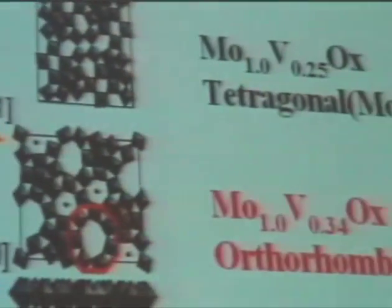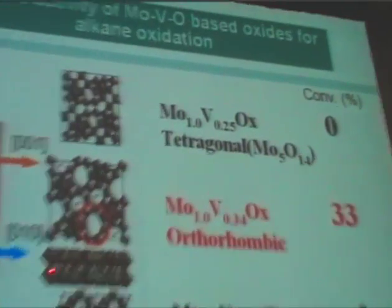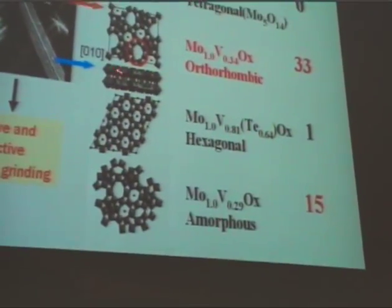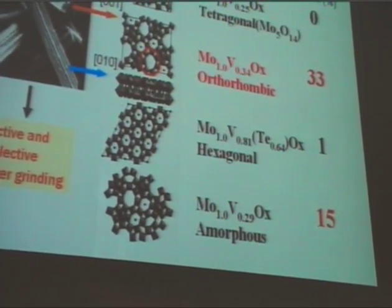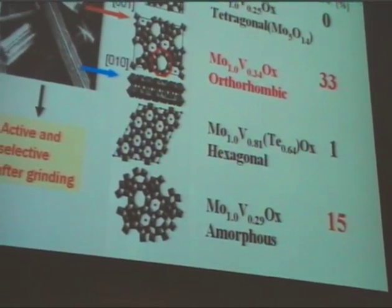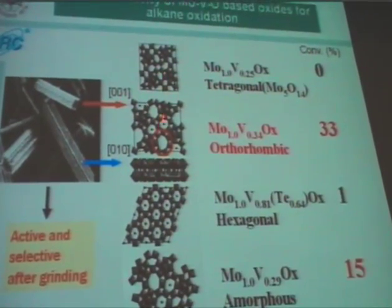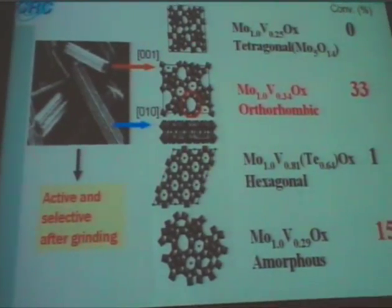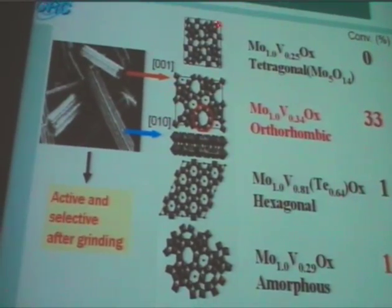There are many types of molybdenum-vanadium-based complex metal oxides, all of which have a similar arrangement — molybdenum pentagonal units — and we can create different arrangements of the framework. Like this, like this, like this. And we can compare the catalytic properties of both of these typical categories for propane oxidation.